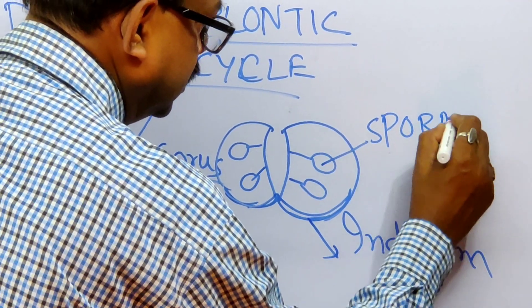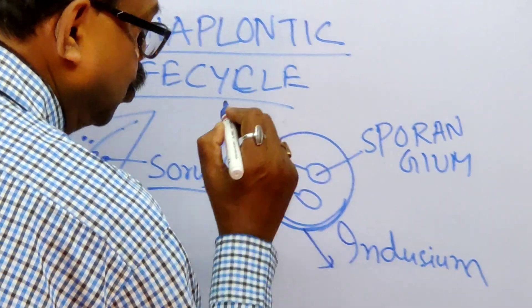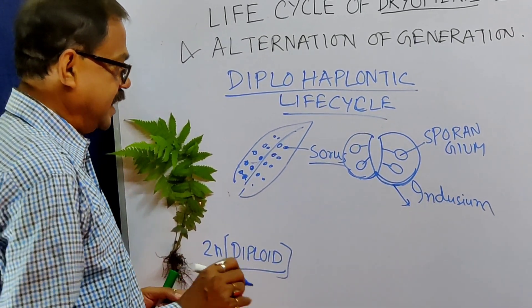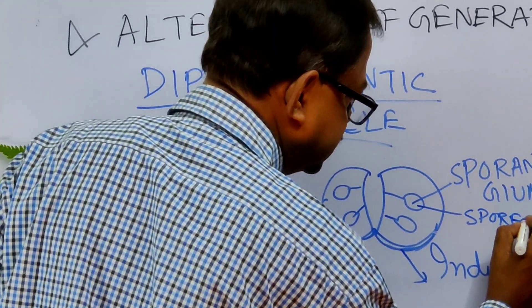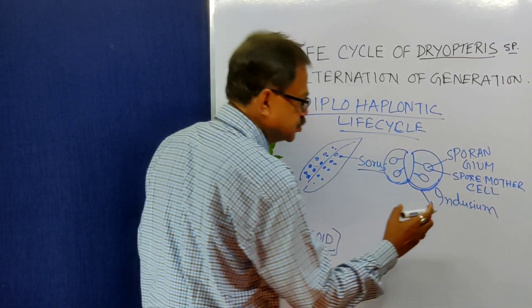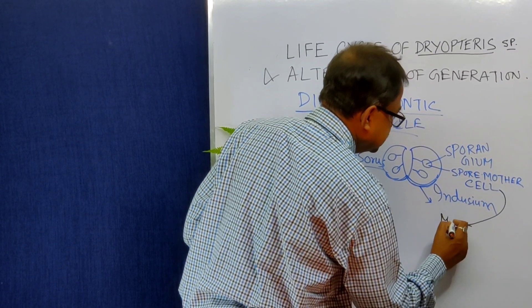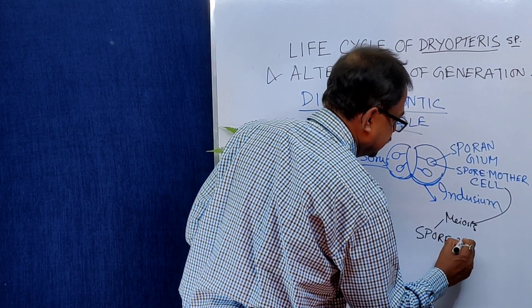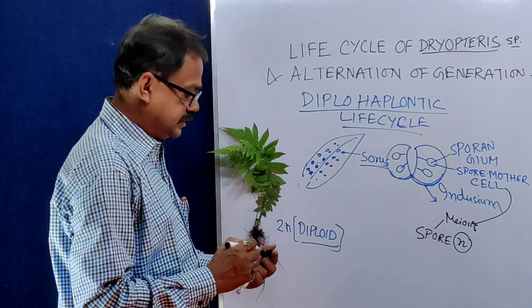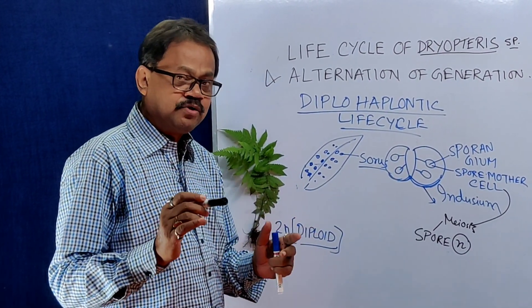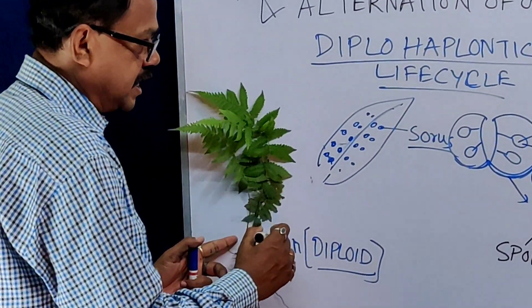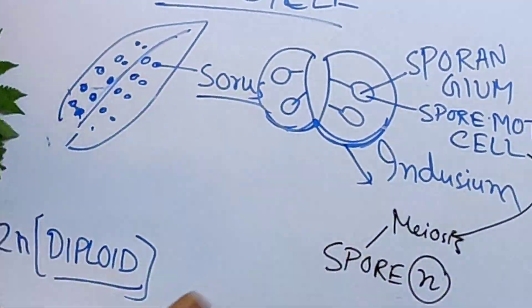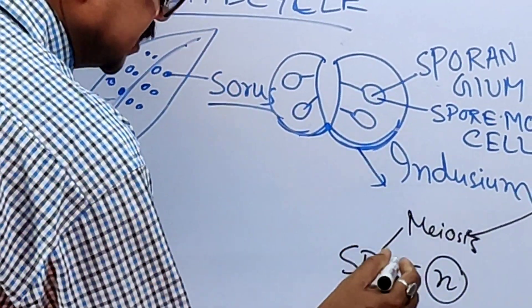This is the sporangium. Within the sporangium there is a spore mother cell. This spore mother cell undergoes meiosis and produces spores that are haploid. When the spore is formed, it becomes haploid — that means the gametophyte stage starts. So up to this point is the sporophytic stage, and when the spore mother cell produces spores by meiosis, the gametophytic stage starts.